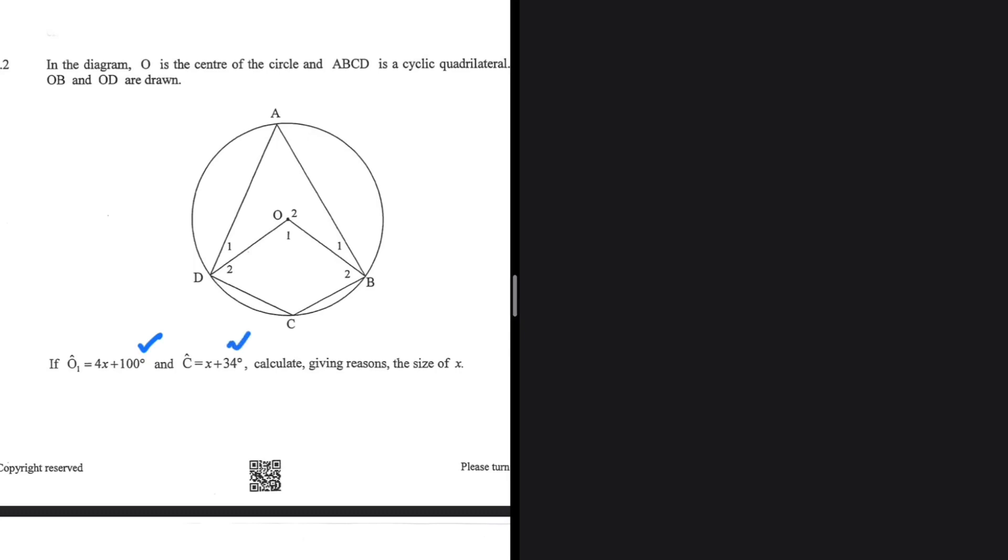So I'm given C equals x plus 34. I have O1, but C plus A should give me 180, as ABCD is a cyclic quadrilateral. So if I can find A in terms of x, then I can say A plus C equals 180. I can do that. I can find A in terms of x.